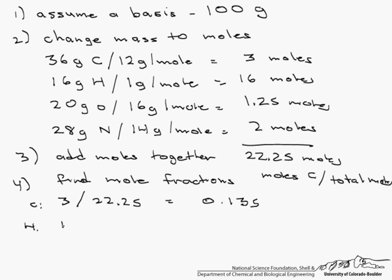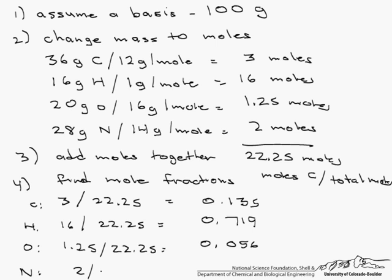We divide that by 22.25 and we have 0.719 as a mole fraction. For oxygen, 1.25 moles divided by 22.25 equals 0.056 moles. And finally with nitrogen we have 2 moles, divide that by 22.25 moles and that equals 0.09 moles. So these are our mole fractions.